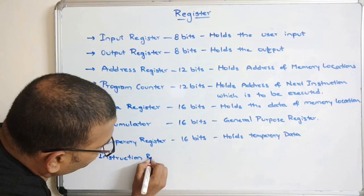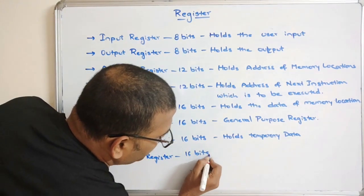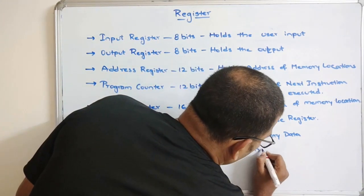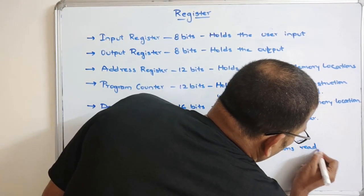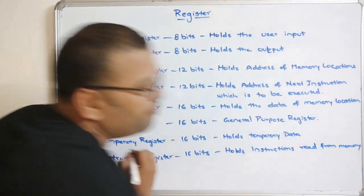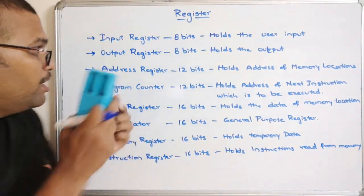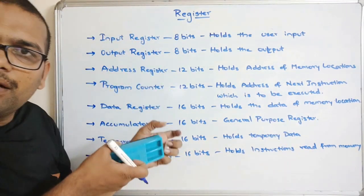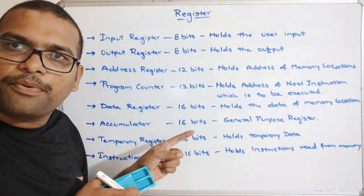The Instruction Register is also 16 bits in size. As the name indicates, it holds the instructions read from memory. Whatever instructions are being read from memory are stored directly in this instruction register.